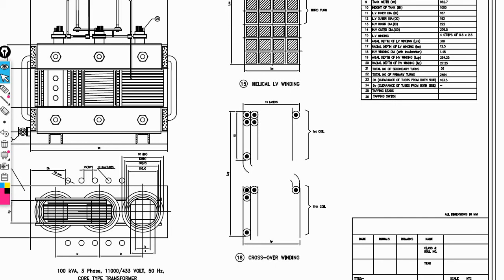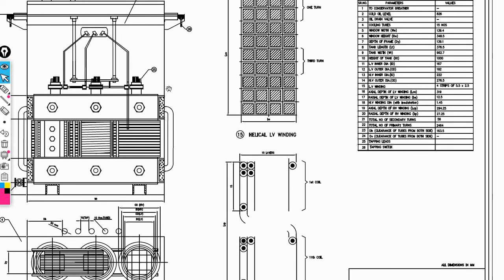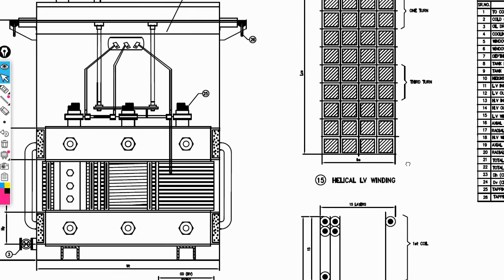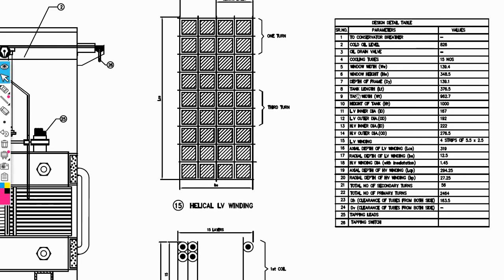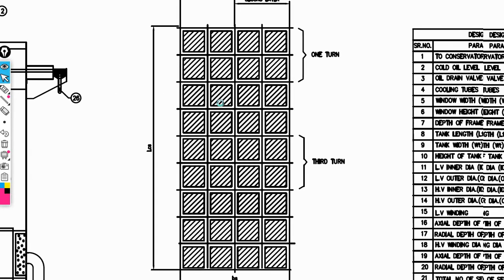We need the transformer parameters: transformer tank, conservator, and breather. In the index, we need the width of tank, width of window, height of window, and tank length. These are the important points here.